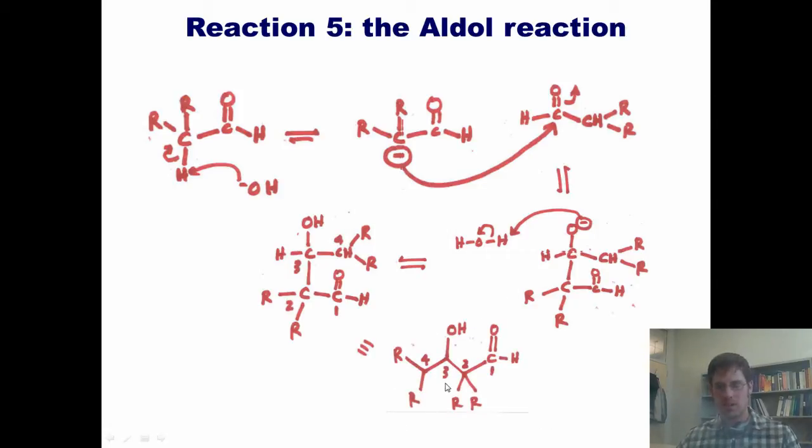This product, you'll notice, is an aldehyde at the end with an alcohol on the beta carbon. Thus, we can say that it's a beta hydroxy aldehyde. In other words, the aldol reaction takes an aldehyde starting material and makes a product that has an aldehyde in it and an alcohol in it. So if I take the two terms aldehyde and alcohol and squish them together, I make the word aldol.